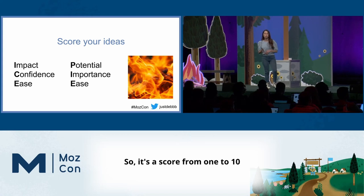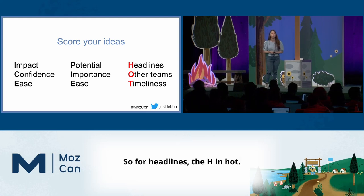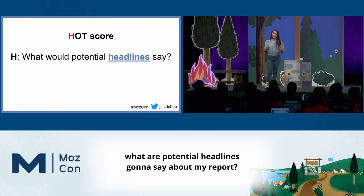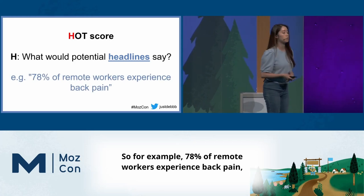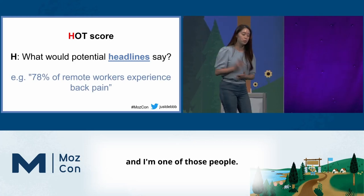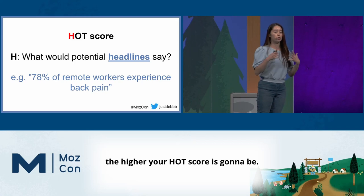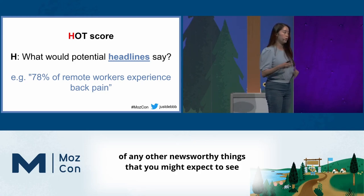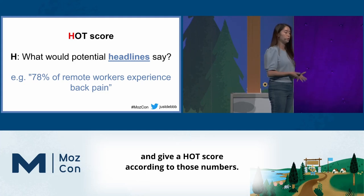The HOT score is a score from one to ten that factors in three things: Headlines, Other teams, and Timeliness. For Headlines — the H in HOT — we're going to think about what are potential headlines going to say about my report. So for example: '78% of remote workers experience back pain.' The more headlines that you can think of, the higher your HOT score is going to be. You want to think of any other newsworthy things you might expect to see in a newspaper or magazine about your report.